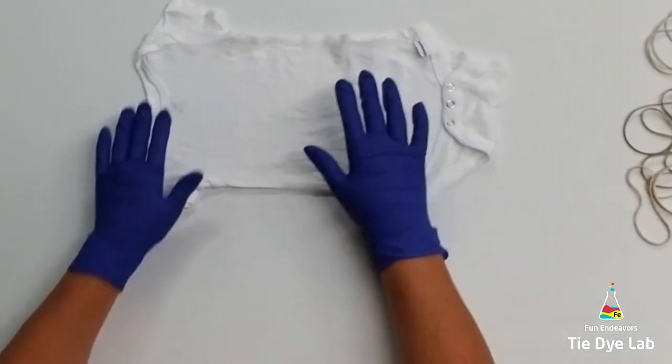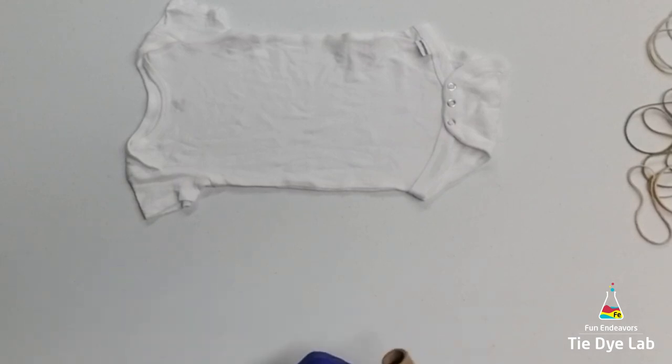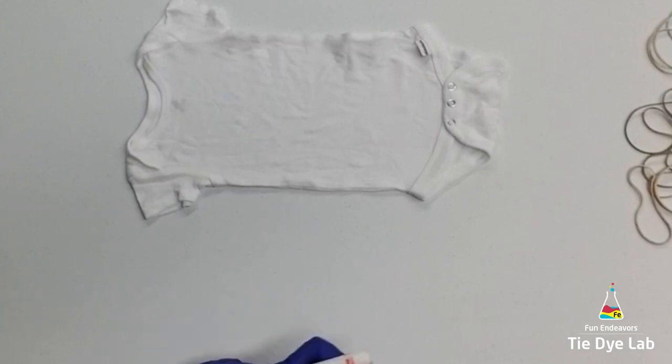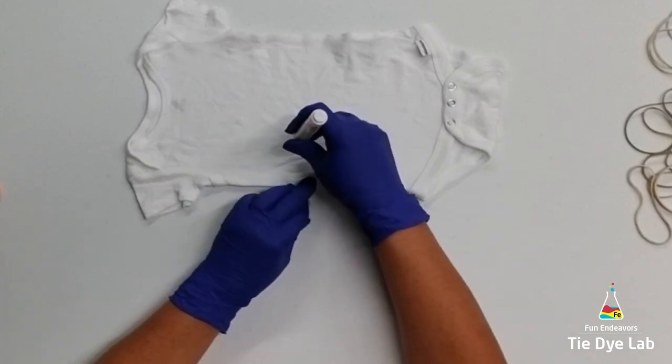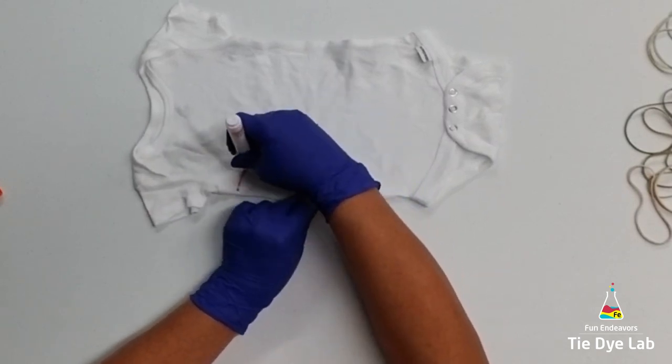The first one is a side fan fold. So I have my onesie laid out flat and I'm taking a washable marker that I'm going to wrap a little bit of kite string around, find a point on my onesie where I want the middle of my fan fold to begin, and draw an arc on the onesie with the washable marker.